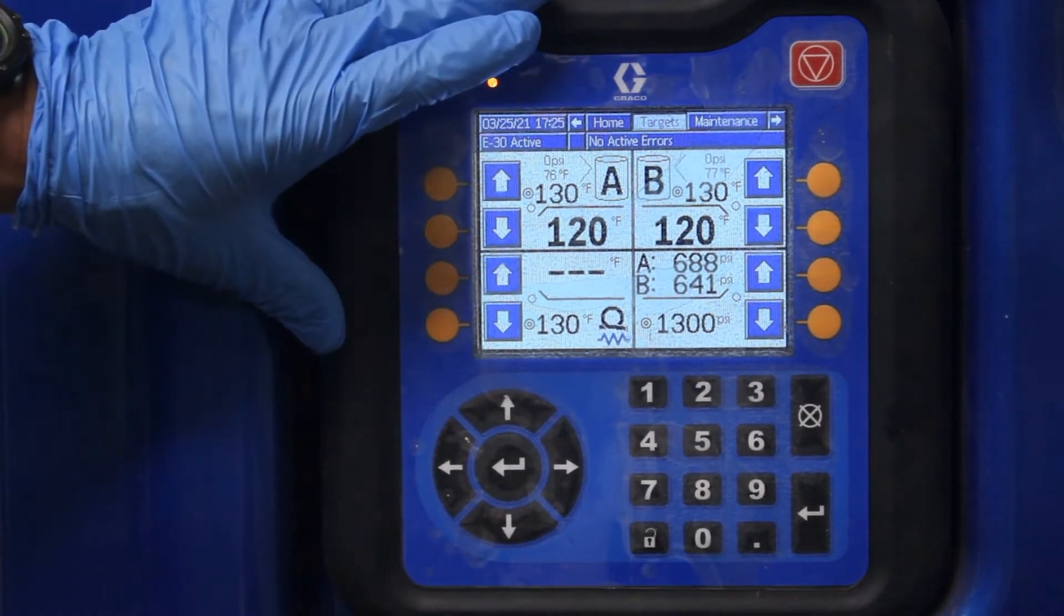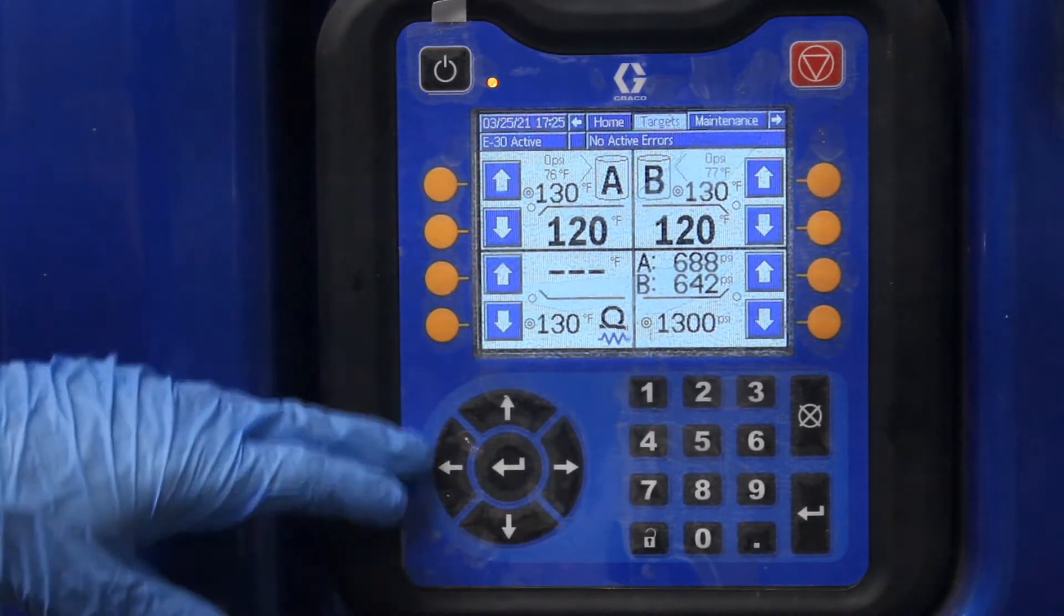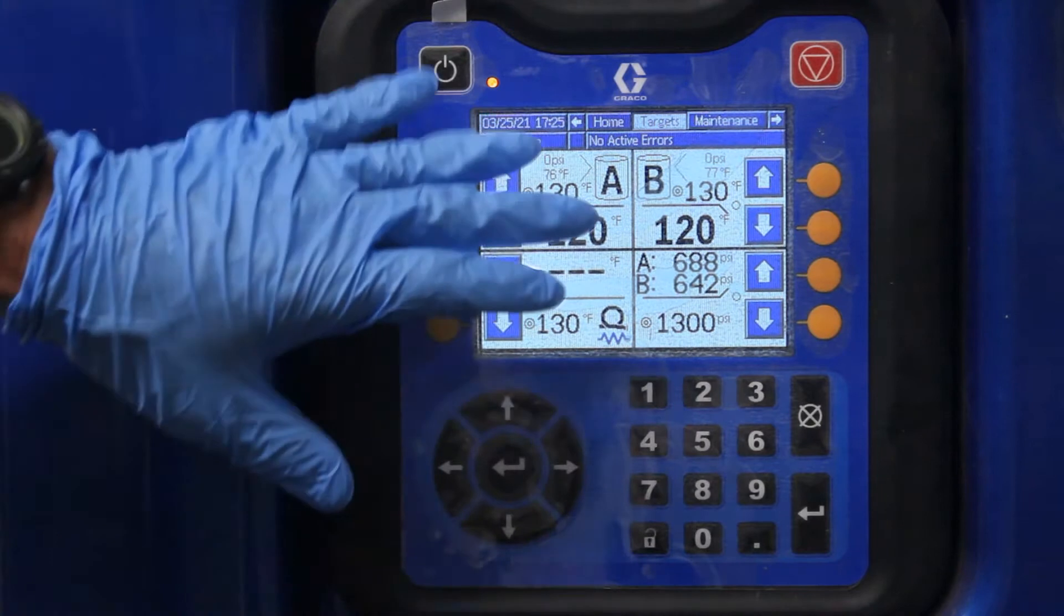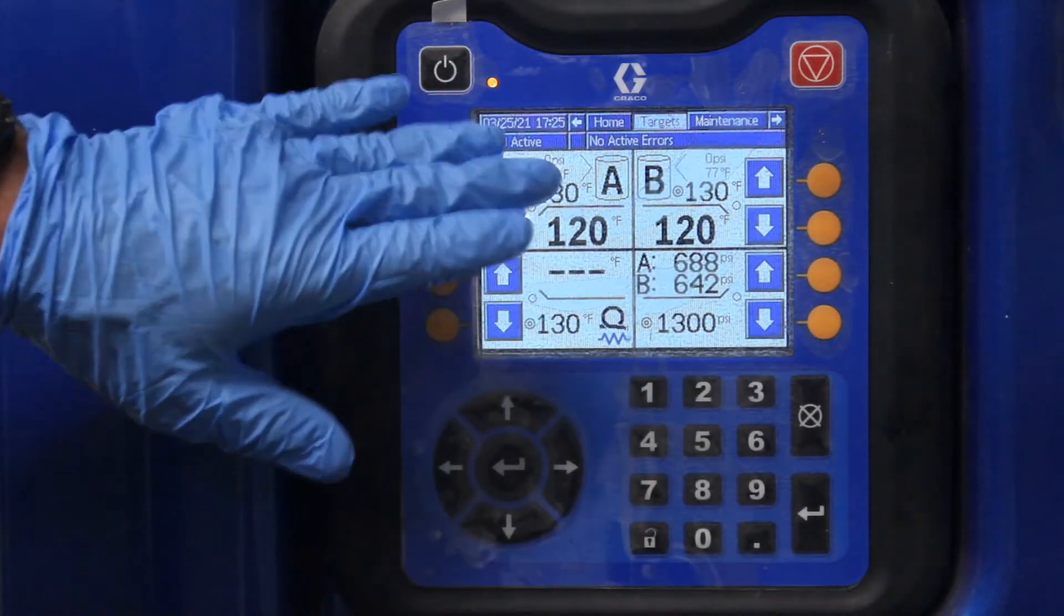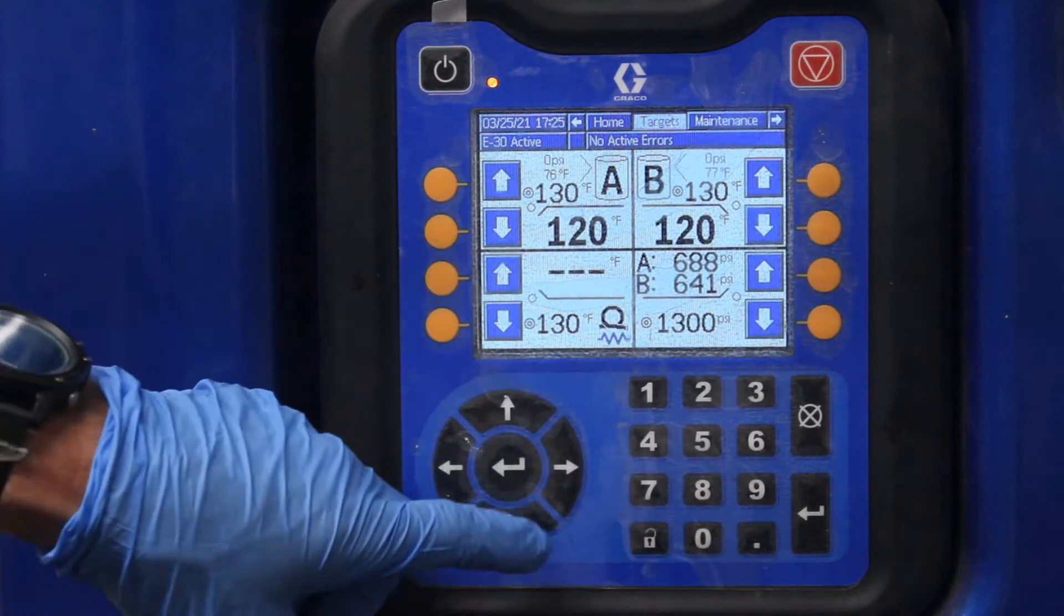It controls everything on the machine from the pressures to the temperatures. It has different screens. As you first turn this on, it'll show a little black emblem going around, and then it pops up like this. This is your main screen that everybody uses.